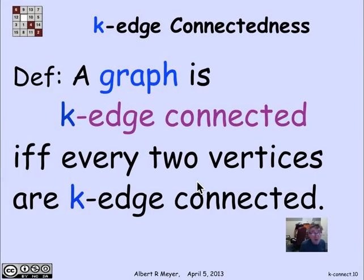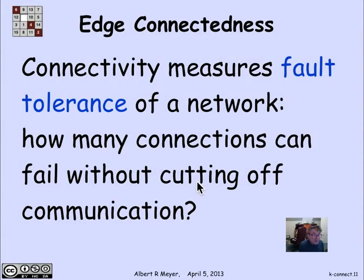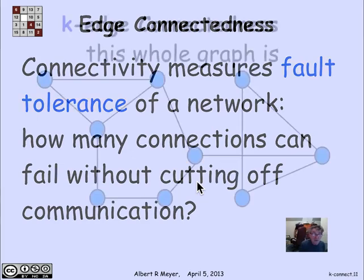For a whole graph, a whole graph is k-edge connected if every two vertices are k-edge connected. The point of this degree of connectivity is that if you think of this graph as indicating a communication network where vertices are centers that are sending and receiving data, and an edge corresponds to having some kind of channel or cable between adjacent centers, then connectivity is a measure of how many of your channels or cables can go down and still have the property that every center of information can communicate with every other center. How many connections can fail without cutting off communication?